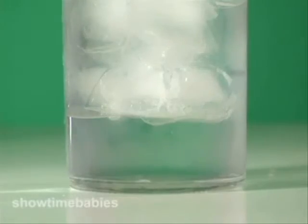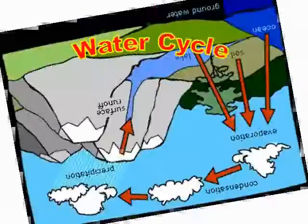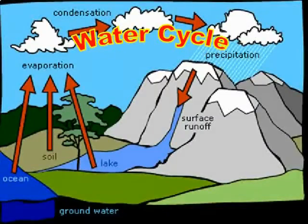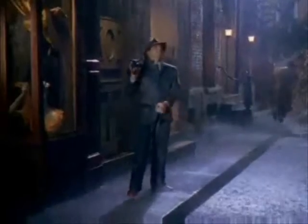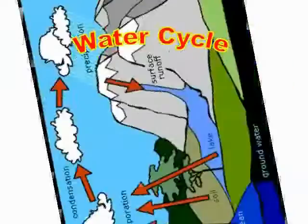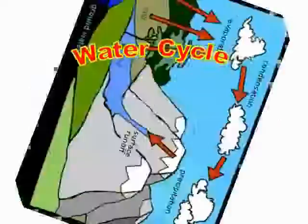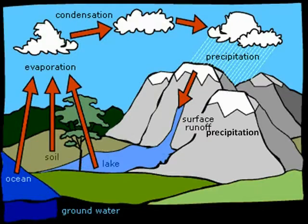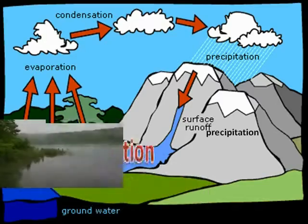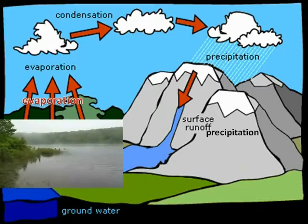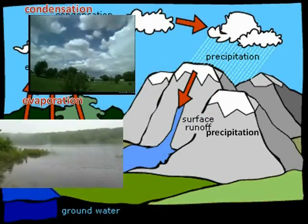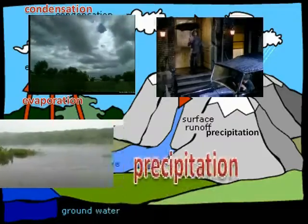Evaporation and condensation — the water cycle, the water cycle — followed by precipitation, the water cycle, the water cycle. The never-ending cycle is taking place all the time and everywhere.